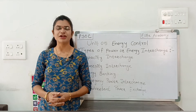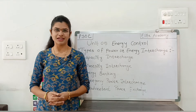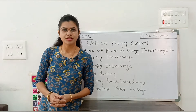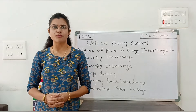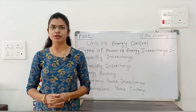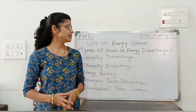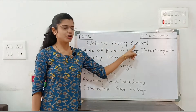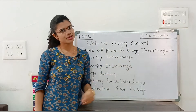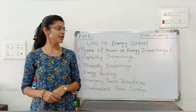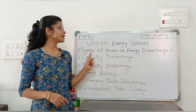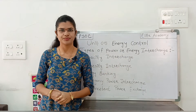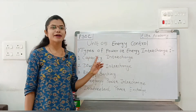Hello friends, this is Puja. Welcome to my Elite Academy YouTube channel. In this video we are going to learn the Power System Operation and Control subject — Unit Number Five: Energy Control. Let's start with the first topic: types of power or energy interchange. The first type is capacity interchange.